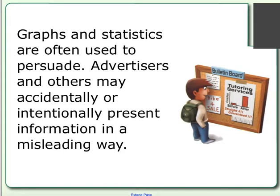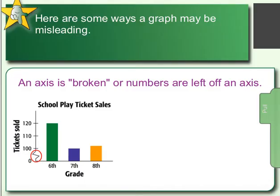Advertisers and others may accidentally or intentionally present information in a misleading way. There are a lot of different ways that graphs can be misleading. The first one is an axis can be broken or numbers are left off.